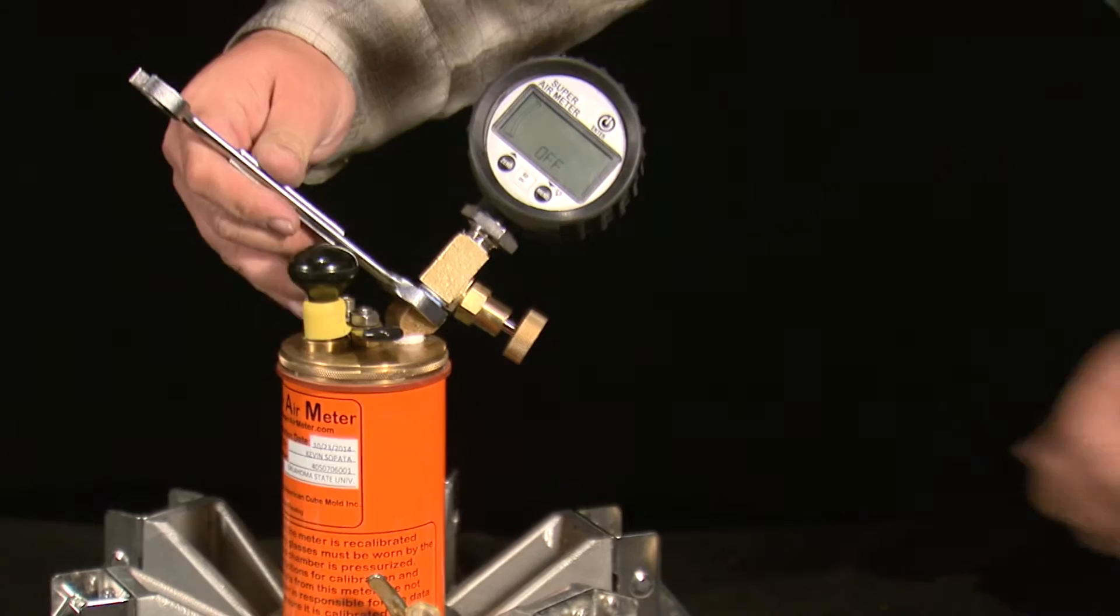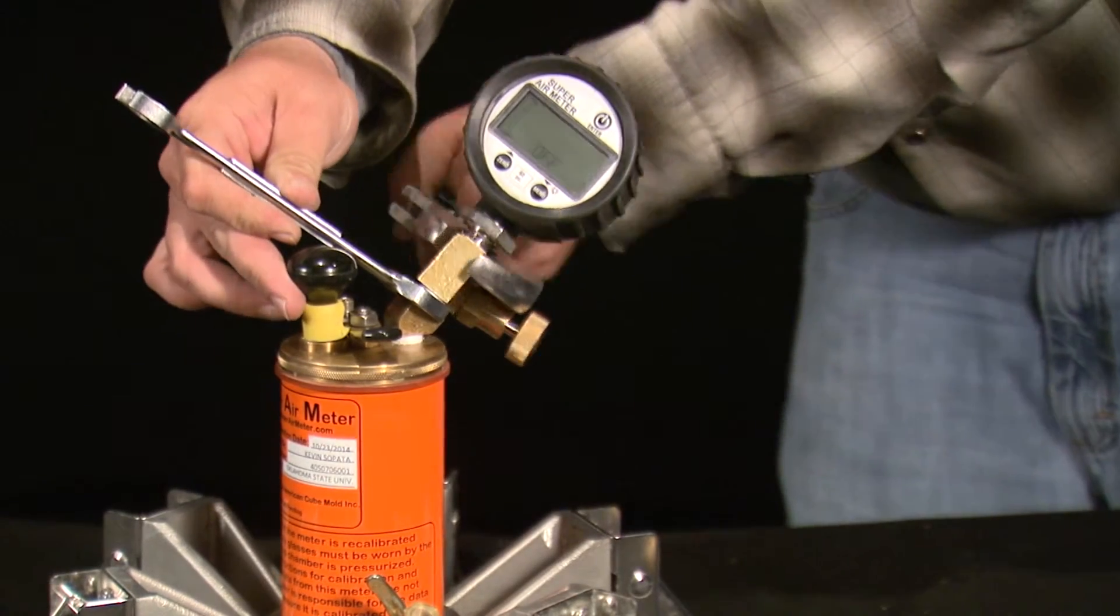Once it's screwed on and snug using the wrenches, turn it on and zero the gauge.